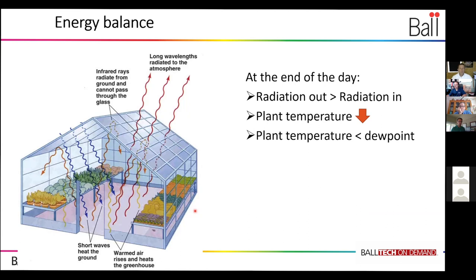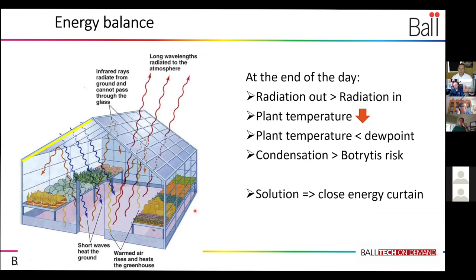And when the plant temperature drops below the dew point, like I said before, you get condensation and you get high botrytis risk in your plants. The solution for this is putting on high pressure sodium light, but the most used solution is closing the energy curtain. Because when you close the energy curtain,